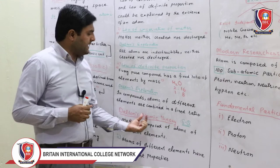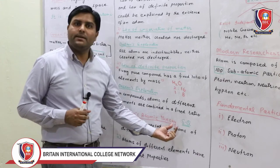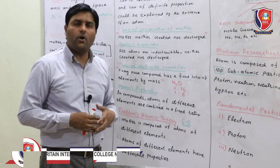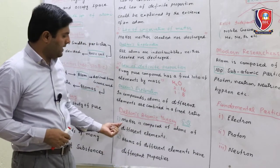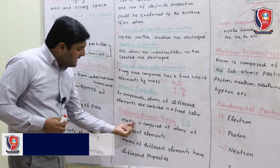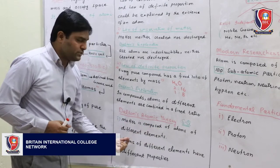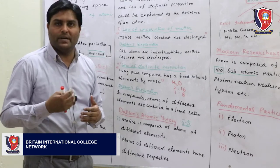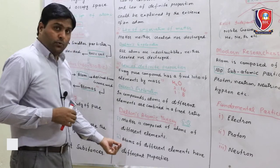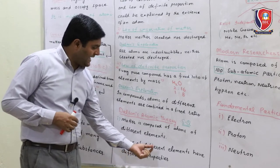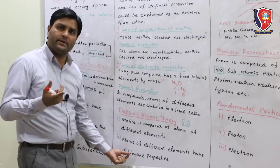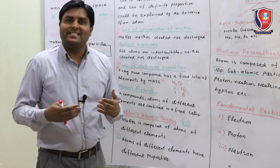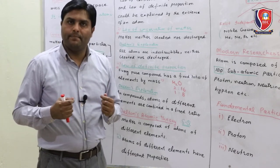After that we have Dalton's atomic theory — this is a short question. Write down the postulates of Dalton's atomic theory. Dalton said: number one, matter is composed of atoms of different elements. Number two, atoms of different elements have different properties — because each element is different, therefore its properties are also different.